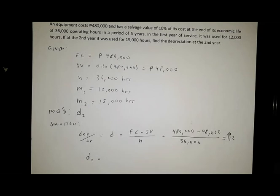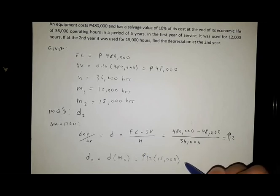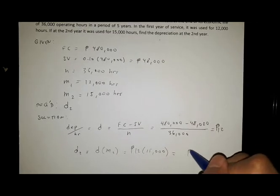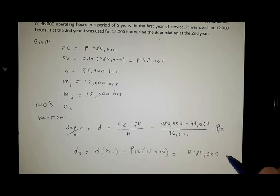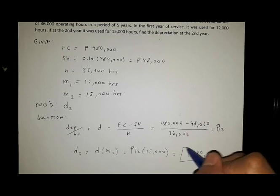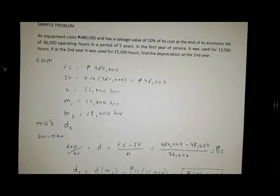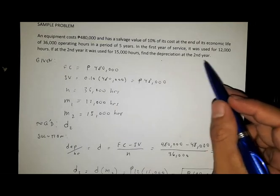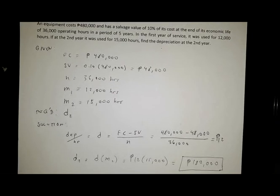So here your D, the amount of depreciation per hour, is 12 pesos. So in order to solve for D2, let us multiply D by m2. So that is equal to 12 times 15,000, and that is equal to 180,000 pesos. And this gives the depreciation at the second year only, and that answers the sample problem.